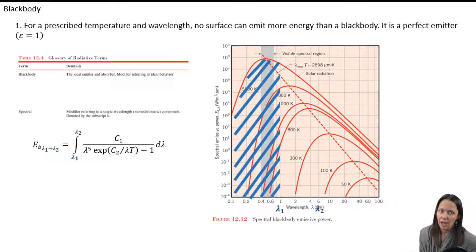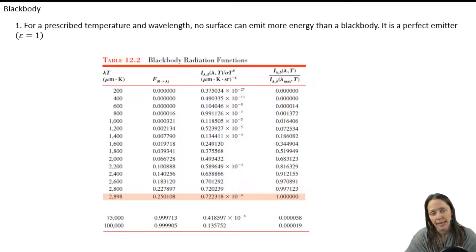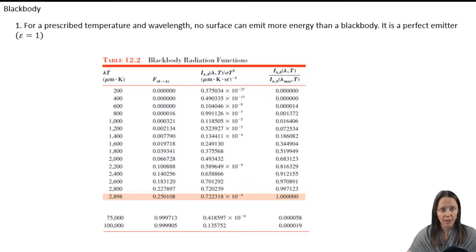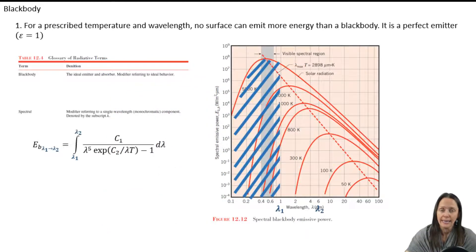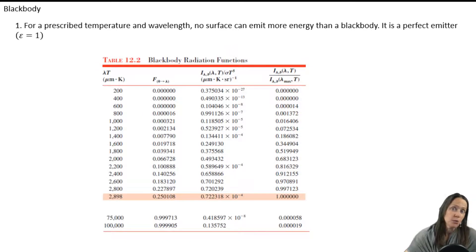But what if I'm interested in just finding out how much energy is emitted by a black body between certain wavelengths, maybe not just between zero and infinity. So in that case, I'm going to look at the emissive power that's emitted by a black body at 5,800 Kelvin between lambda 1 and lambda 2. So I don't really need to integrate this ugly thing. It turns out that somebody has already done the work for me. So let's look at table 12.2.